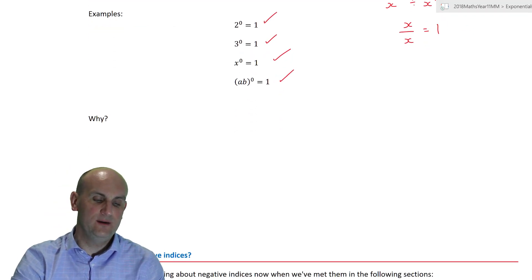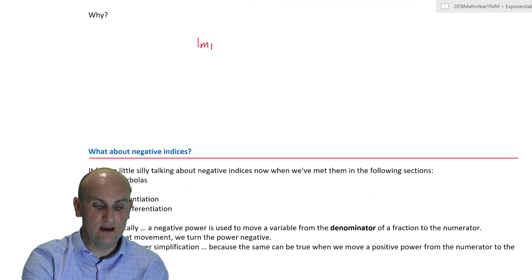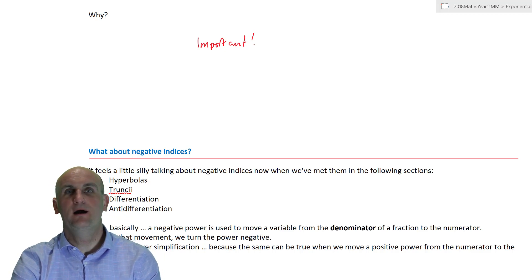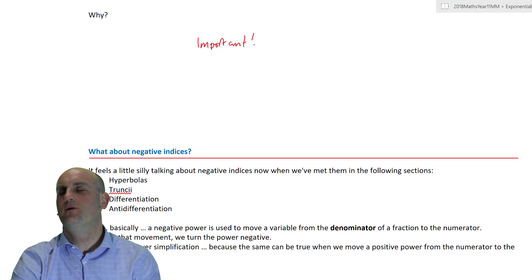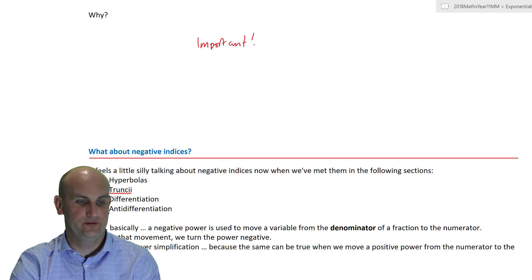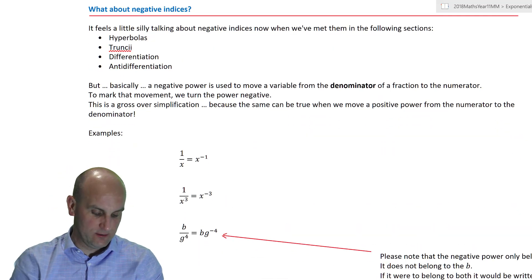This zero index is really, really important — it's one of those party tricks you can pull out. You know, telling everyone in the canteen why anything to the power of zero is one. Actually, don't do that — the whole canteen will clear and your school career might be over.